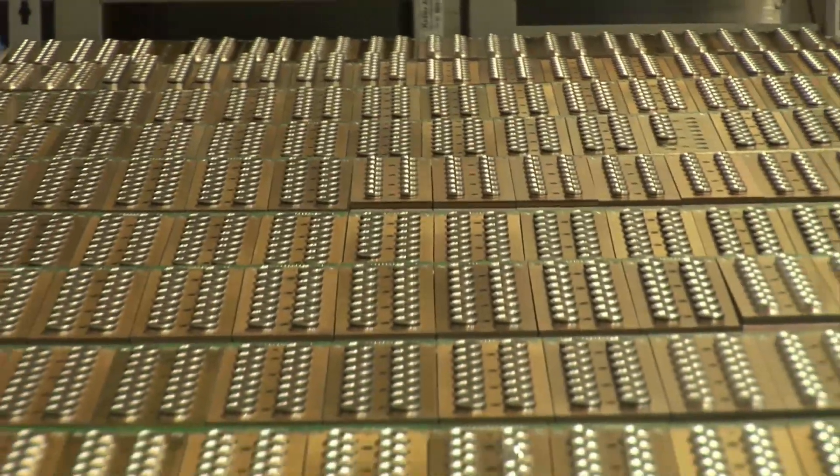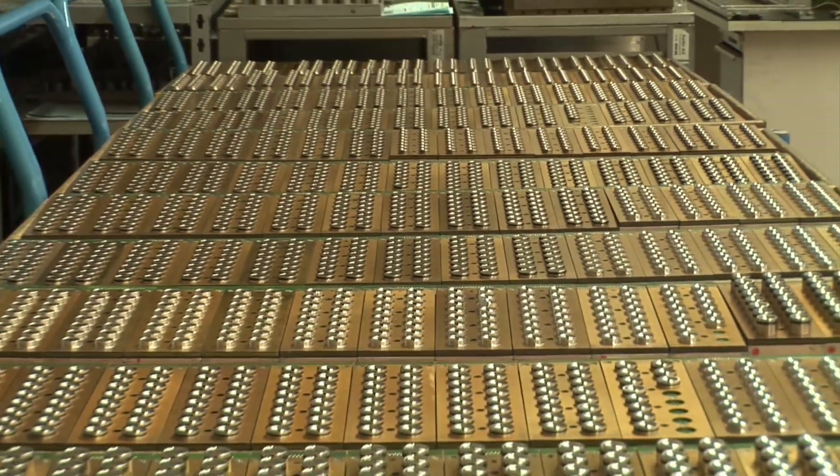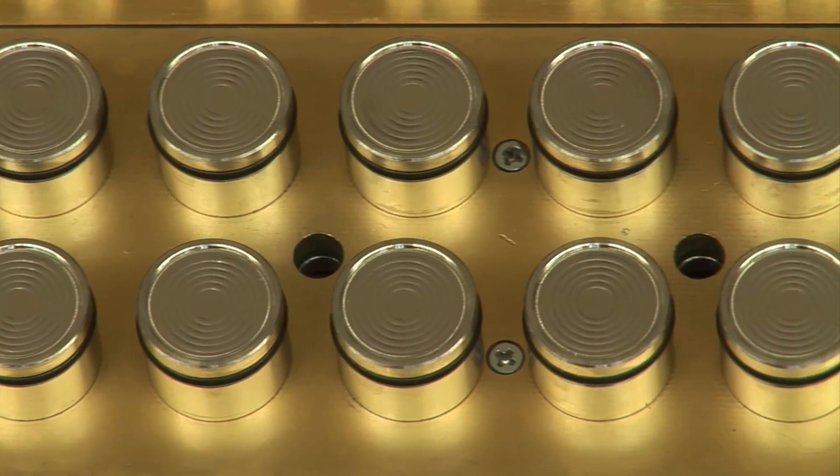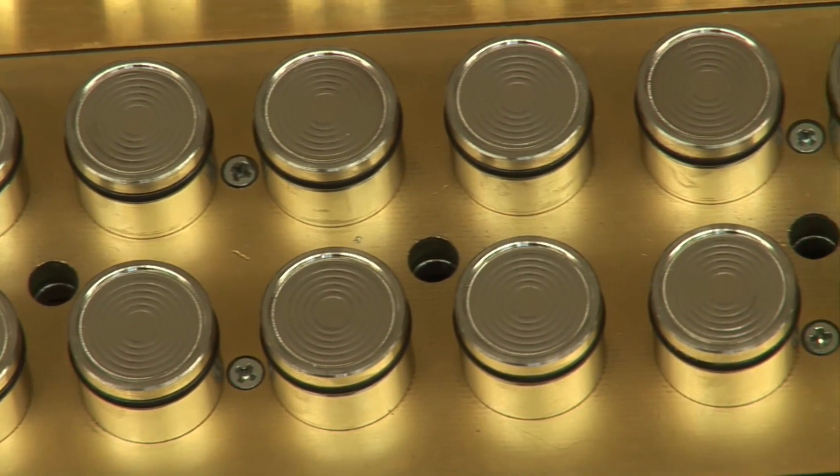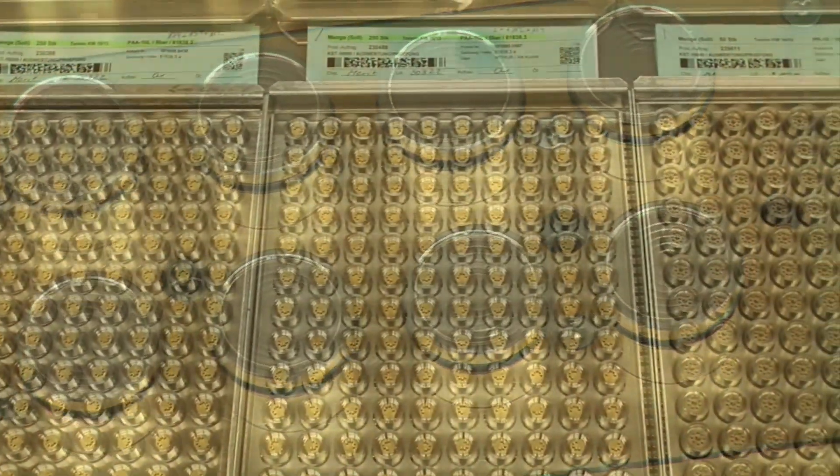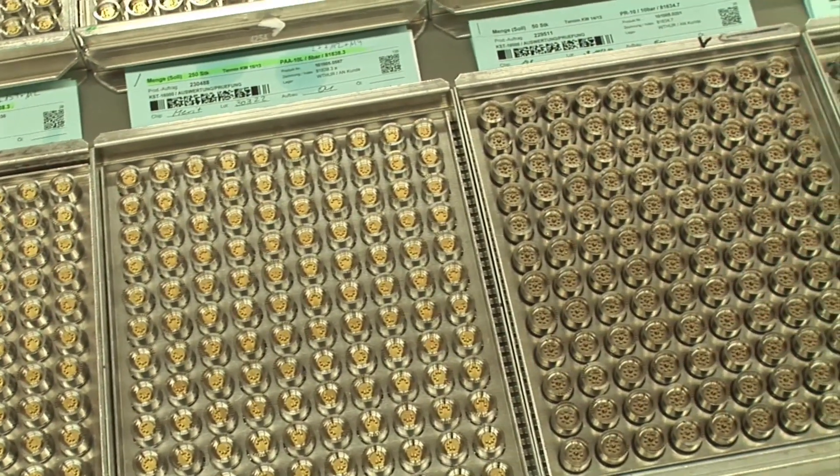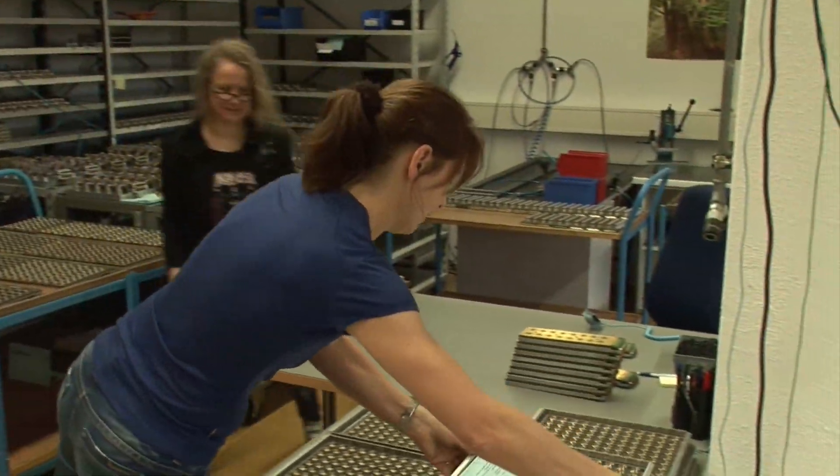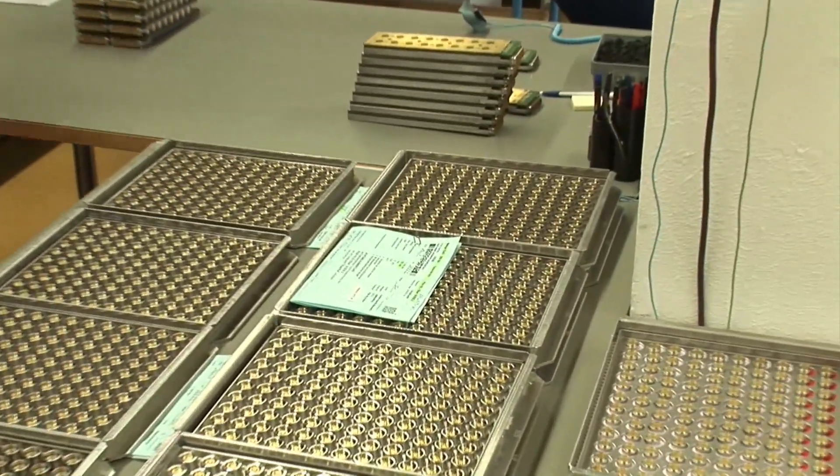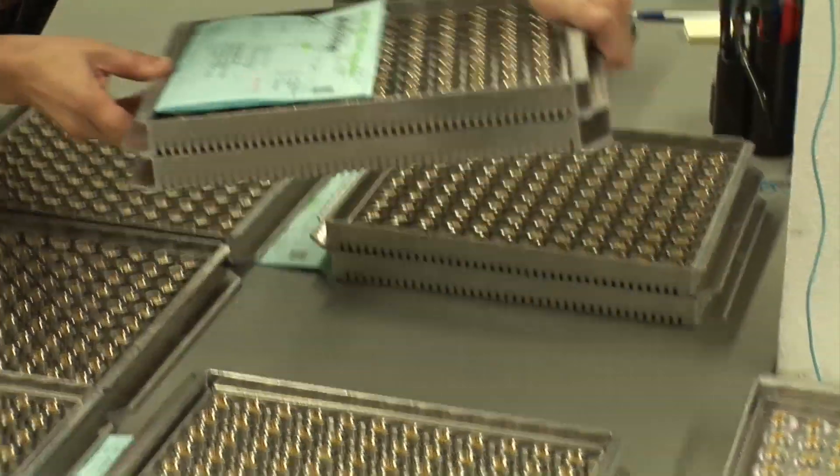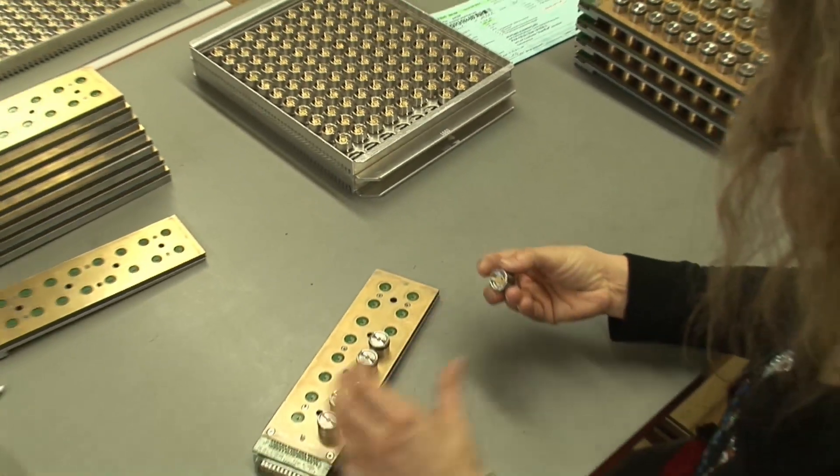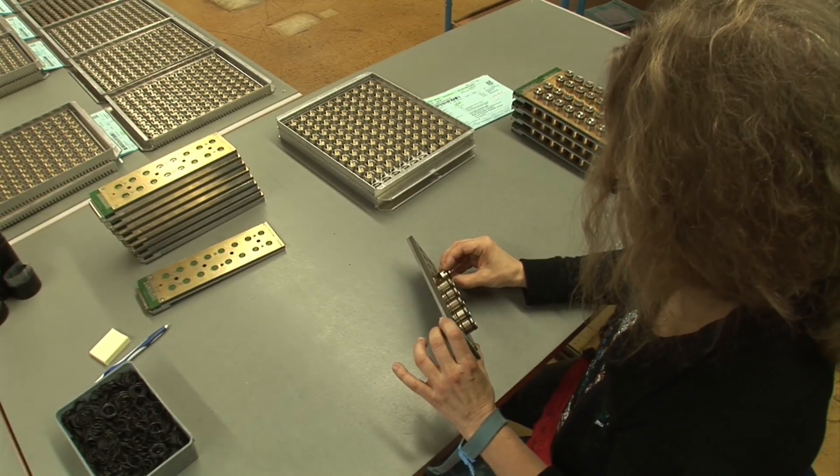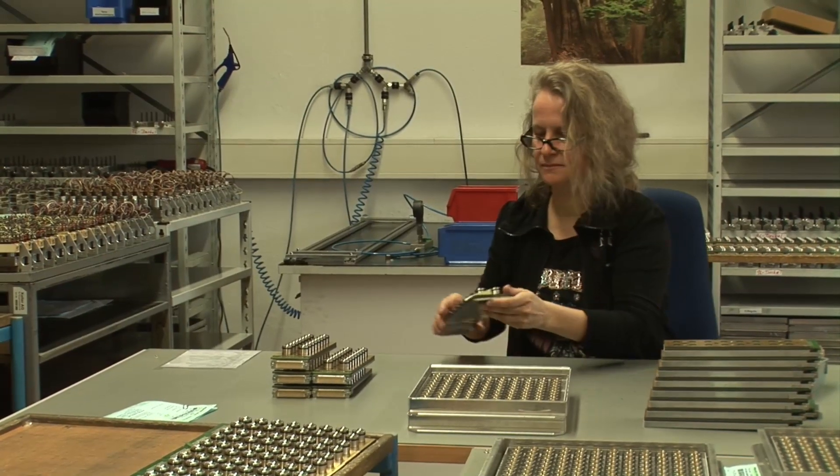Despite being industrially manufactured, sensor elements are just as unique in their behavior as humans. It's therefore necessary to examine each individual pressure transducer in testing stations and to determine its particular behavior. To do this, each unit is inserted into the measuring device by hand and exposed to different temperatures and pressures in climatic chambers, until there are at least 300 measurement readings available for each sensor.